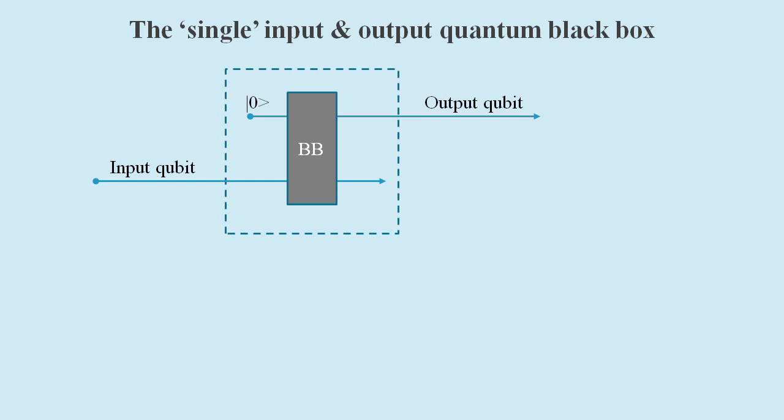So now we'll consider the quantum black box circuit with just one input and one output. Like the classical case, there are four possible operations.